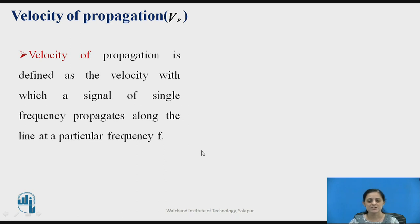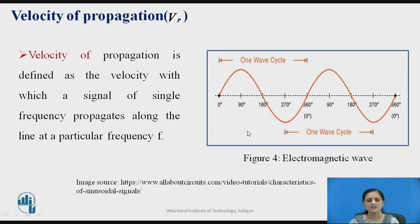The second characteristic of the transmission line is the velocity of propagation. What is the velocity of propagation of a wave? It is defined as the velocity with which a signal of single frequency propagates along the line at a particular frequency f. You can refer to this electromagnetic wave — the wave which has the highest frequency range, generally in terms of gigahertz, ranging from 3 gigahertz to thousands of gigahertz. This sinusoidal wave has one wave cycle from the first maximum to the second maximum, covering a phase shift of 2 pi radians.